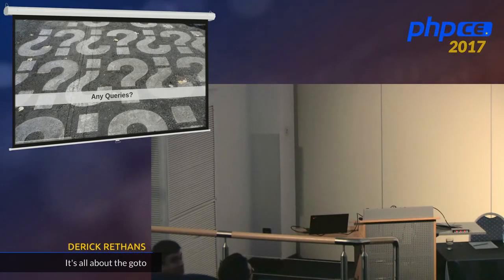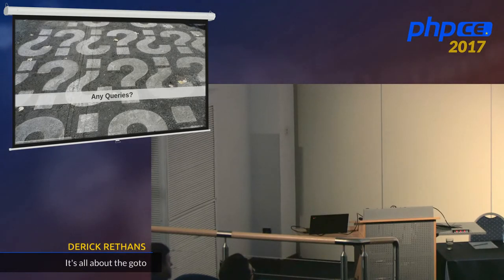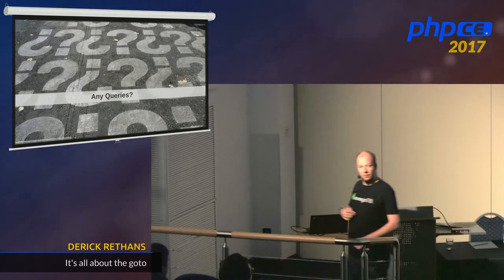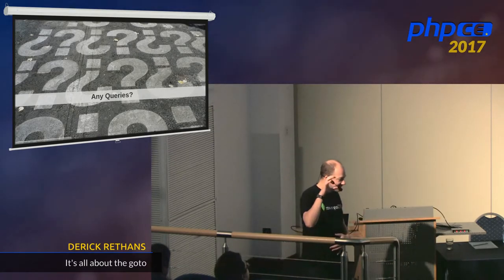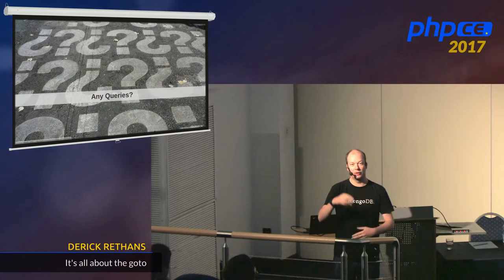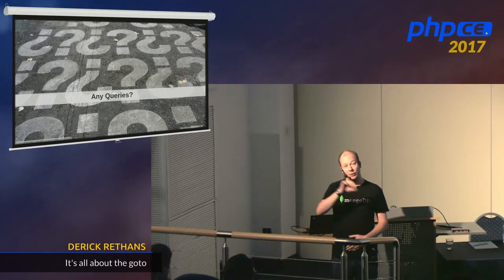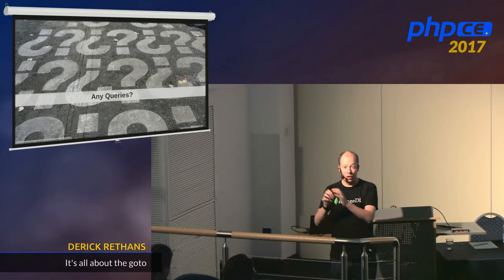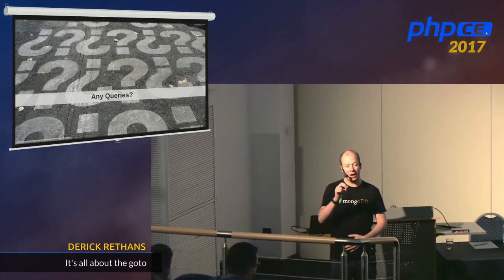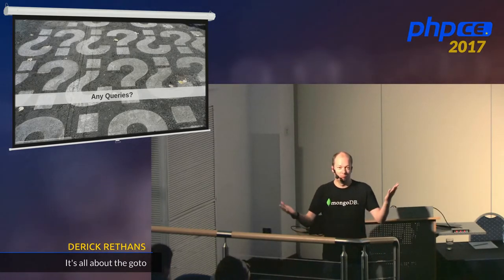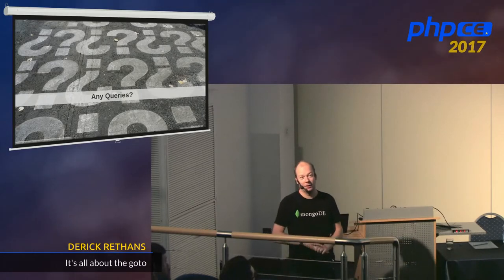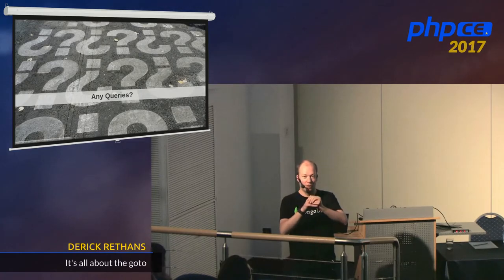Q: In the dead code example, you had two returns - one returning null in the opcodes and another returning one. Is there a difference between returning with 'return' and returning by reaching the end of the script? A: Yes. At the end of every file, PHP includes a 'return 1', which means if you include a file you can check that it worked. For functions and methods it adds 'return null' at the end. The return 1 happens at the end of a file; return null is at the end of a method or function.